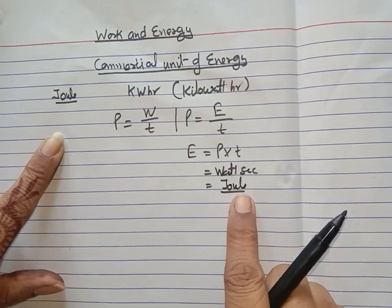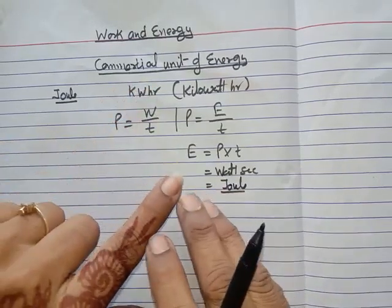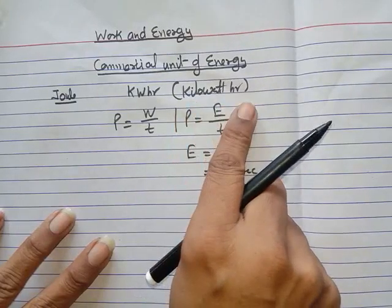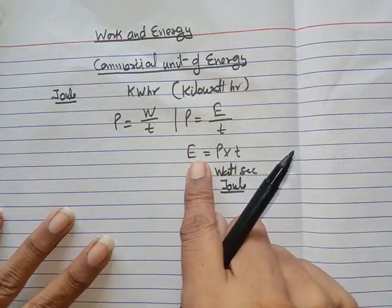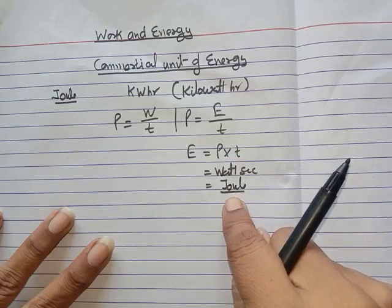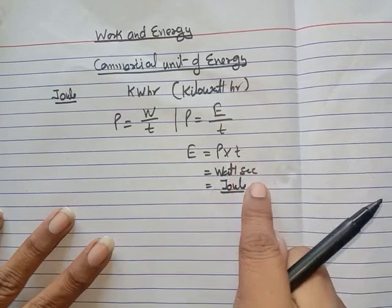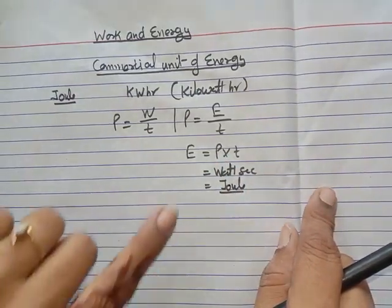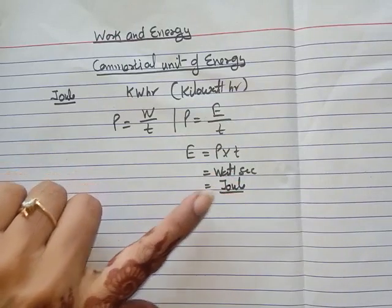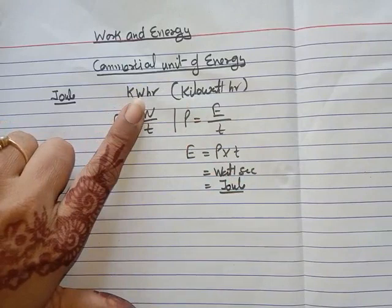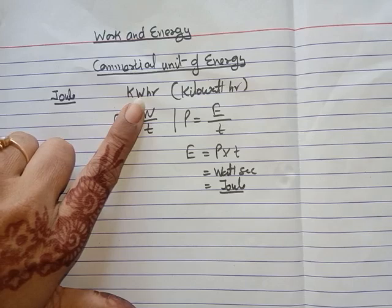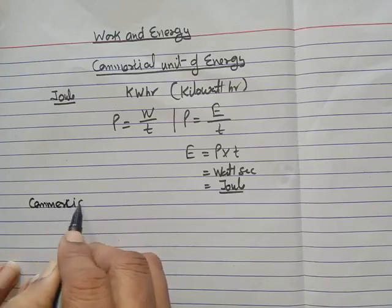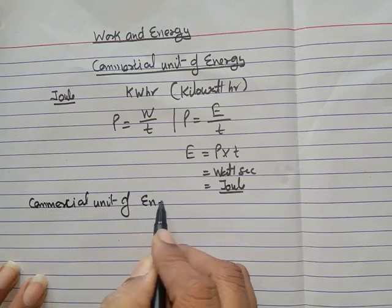So joule is a very small unit. If we use this unit for commercial purposes, we would have to write very large numerical values. For commercial purposes we use the bigger unit, which is kilowatt-hour. Energy consumed equals power multiplied by time. If we represent power in kilowatts and time in hours, the unit of energy consumed becomes kilowatt-hour, which is a bigger unit.